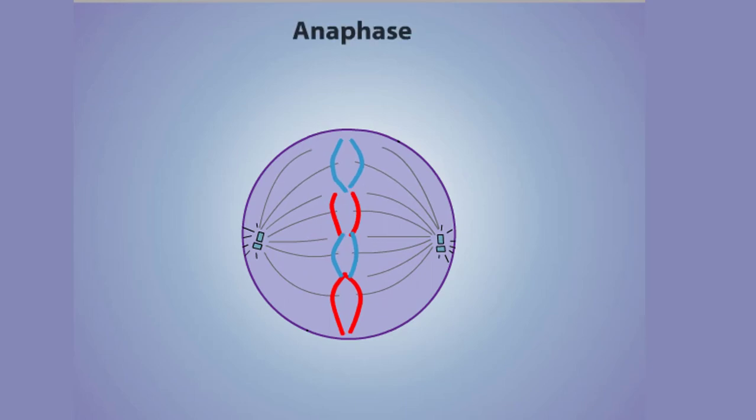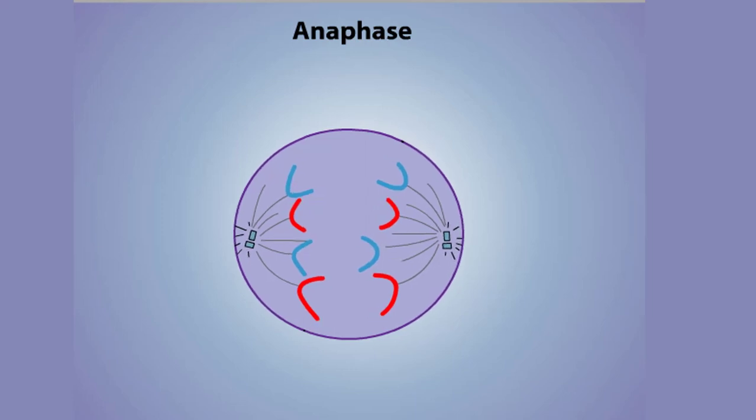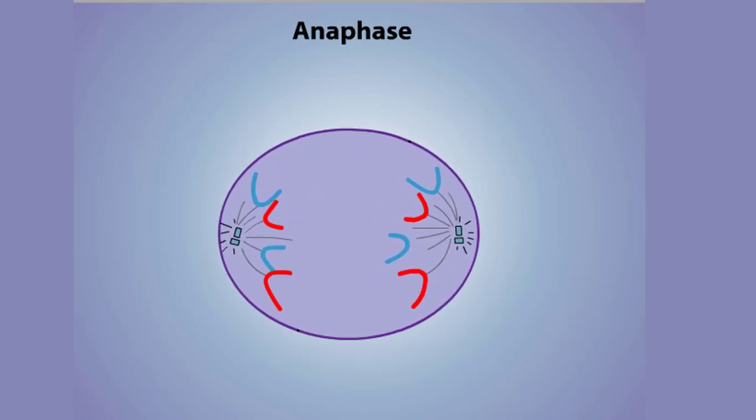In anaphase, the centromere pairs from each chromosome separate, and the single chromatids, which are now considered individual chromosomes, move toward the poles.